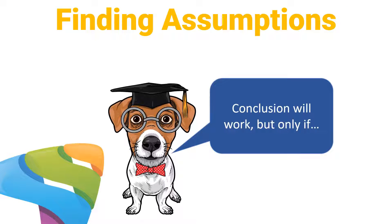The easy way to pick out assumptions in any of these questions is to first pick out the conclusion, and then say, 'Well, that conclusion will work, but only if...' The answer choice that best completes that sentence is your assumption. You just pull out the conclusion and then choose the answer choice that best completes that sentence.